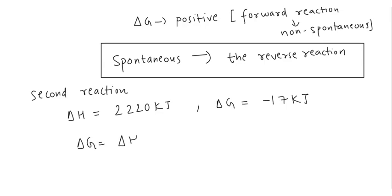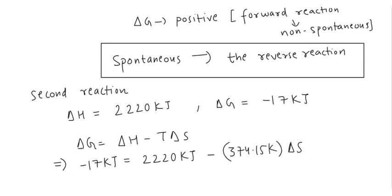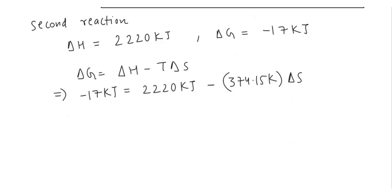We know that ΔG is equal to ΔH minus T ΔS. Here we put the value. Delta G is minus 17 kilojoule. Delta H is 2220 kilojoule. Temperature, we will put 374.15 Kelvin multiplied by delta S. Solving this, we will get the value of delta S as equal to 5.978 kilojoule Kelvin inverse. When we will convert it into joule, it will be 5,978 joule Kelvin inverse. This is the required answer of delta S.